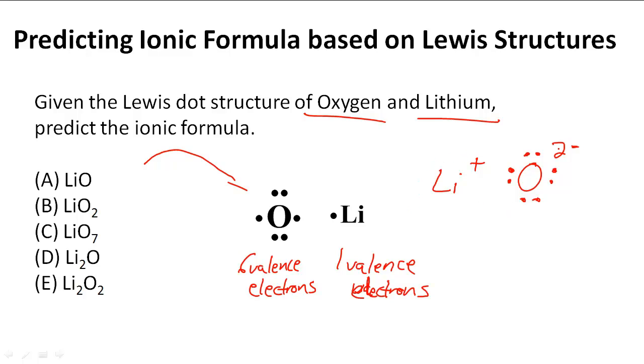When you do this formula, what you can do is the criss-cross rule that you've done before. You put Li, you know you need two of them, because two of them need to donate each of their valence electrons, their one valence electron, to oxygen to complete oxygen's octet.